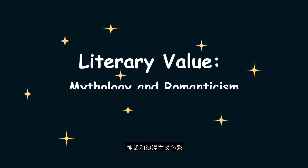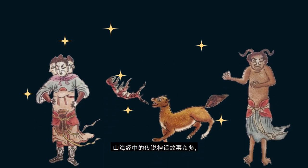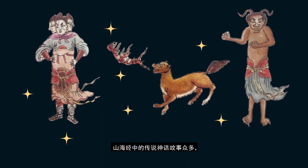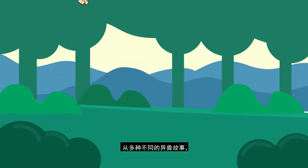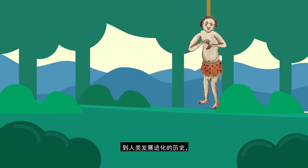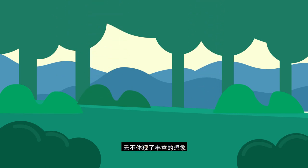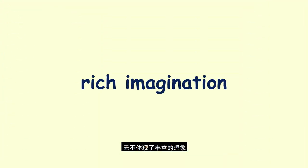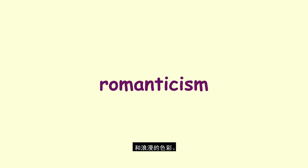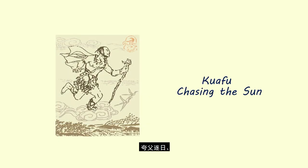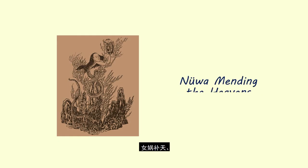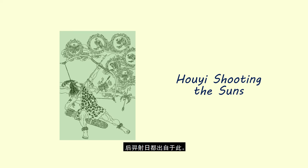Literary value: mythology and romanticism. There are many legends and fairy tales in the Classic of Mountains and Seas that influence the creation of later literature, from tales of rare animals to the history of human evolution. The writings in the book showed rich imagination tinged with romanticism. Legends such as Jin Wei bird filling the sea, Kuaofu chasing the sun, Nuwa mending the heavens, and Hou Yi shooting the suns are all from the book.